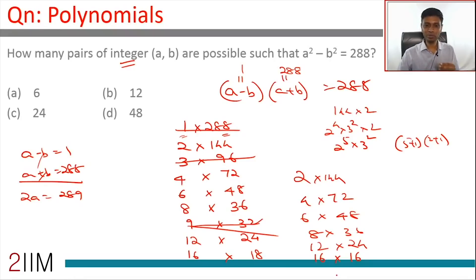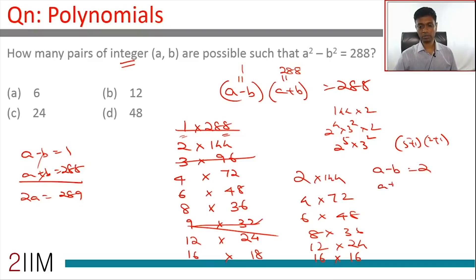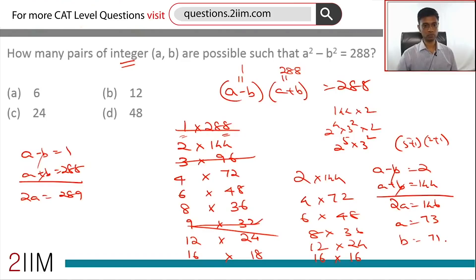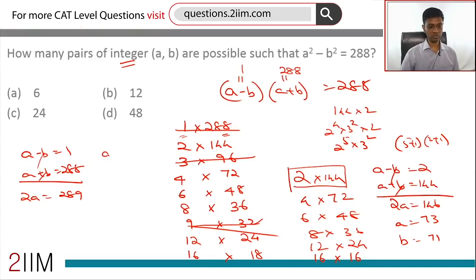Let's work with natural numbers first. If a minus b = 2 and a plus b = 144, then adding gives 2a = 146, so a = 73. Then b = 71. So for this pair, a = 73 and b = 71 is a valid solution in natural numbers.